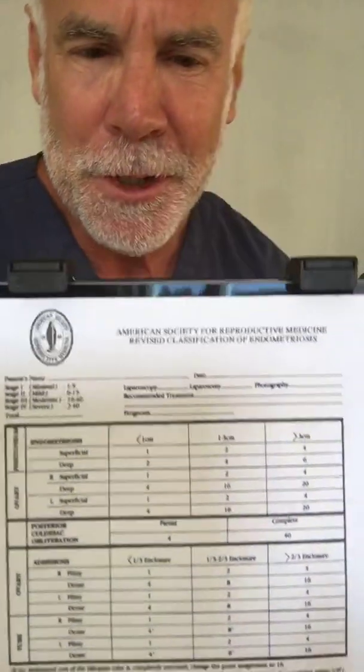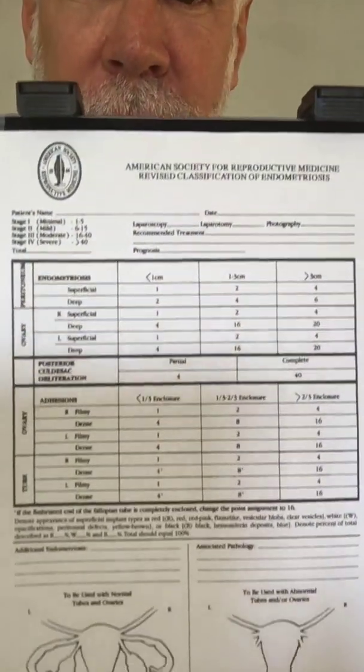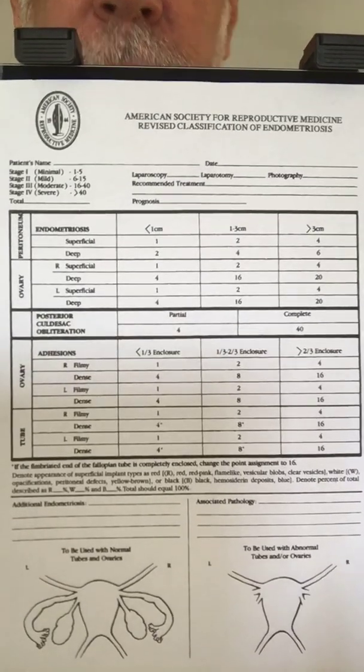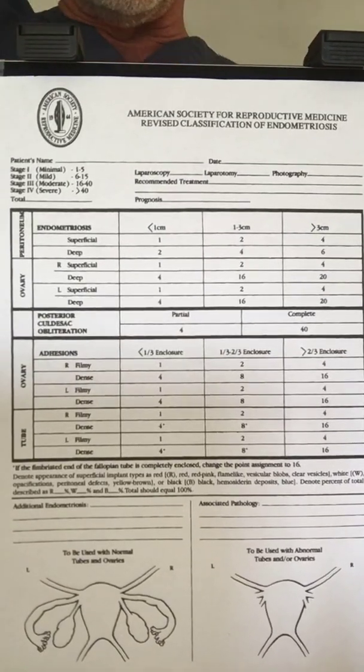Hi guys, good morning, Dr. Cook. Today we're going to talk about classification of endometriosis. I get a lot of questions about what stage is my endometriosis. This is the ASRM — American Society for Reproductive Medicine — classification system, and what I'm going to do is show you some high-tech video features here. I'm going to put this on the website also, but this is the worksheet for endometriosis classification.